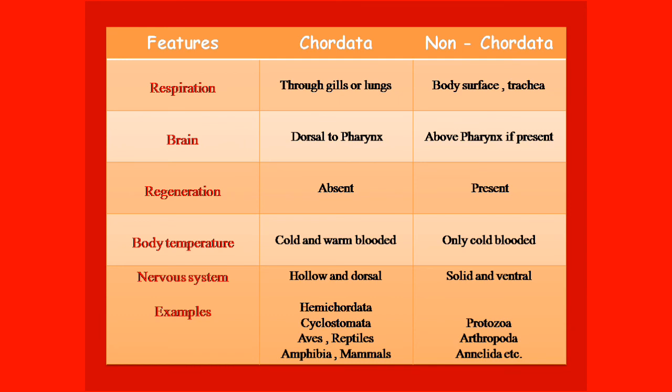For examples: Chordates include Hemichordata, Cyclostomata, Apes, Reptiles, Amphibia, and Mammals. Non-Chordate examples include Protozoa, Arthropoda, Annelida, etc.